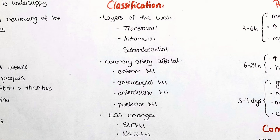Another way of classification is by the coronary artery that is affected. Here we divide the infarction into anterior MI, anteroseptal MI, anterolateral MI, and posterior MI. To check for a posterior MI, we place V4 to V6 of the ECG at the posterior axillary line, scapular line, and paraspinally, respectively. The anteroseptal MI presents with changes in V1 to V3, and the anterolateral with changes in V1 to V6. We can also divide MI by ECG changes — this is the well-known classification into STEMI and non-STEMI.